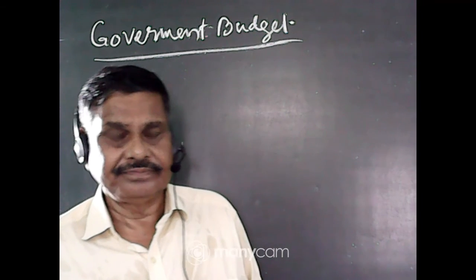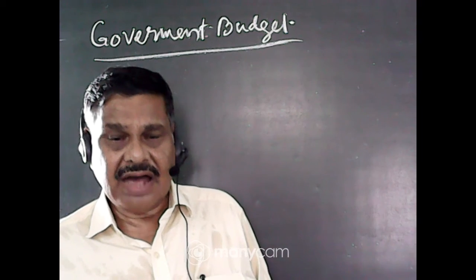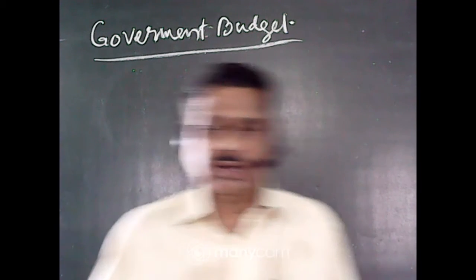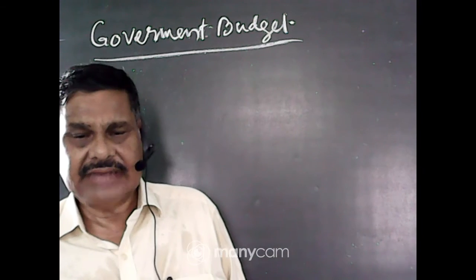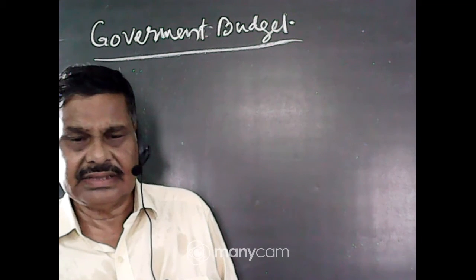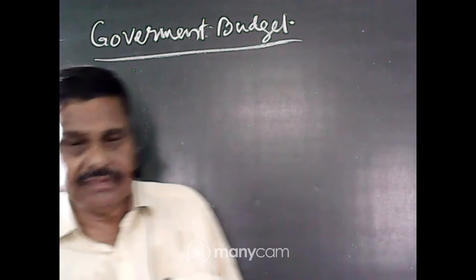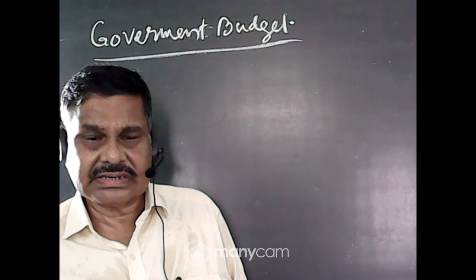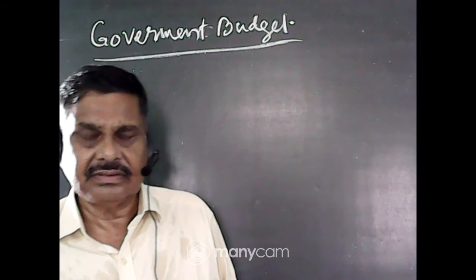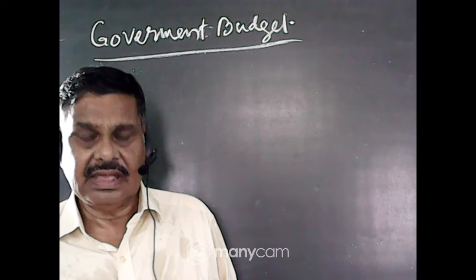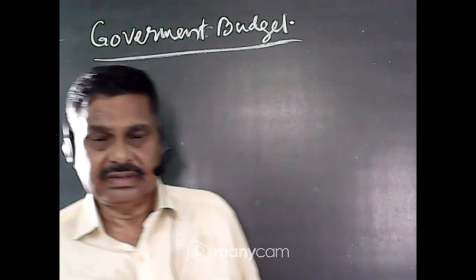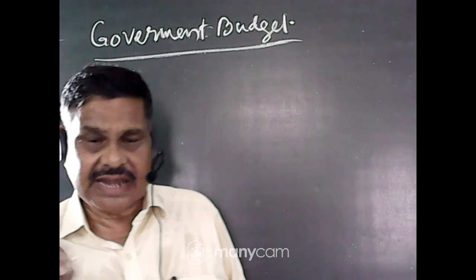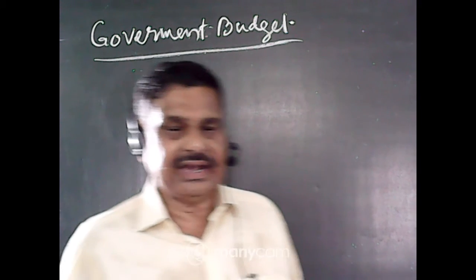If a budget is not made, then a person may spend the entire month's expenditure in a particular week and will have to suffer for the rest of the days of the month. Therefore, the system is to make a budget — revenue and expenditure — what amount the country can earn from different sources, and how that earned money may be spent on different fields. In short, it is the statement of revenue and expenditure.